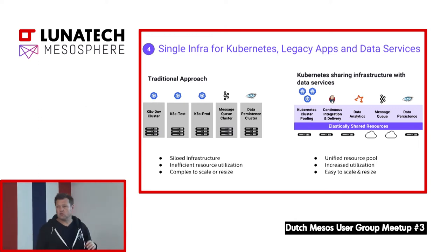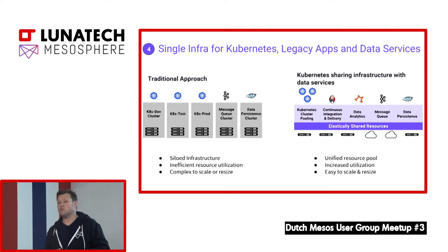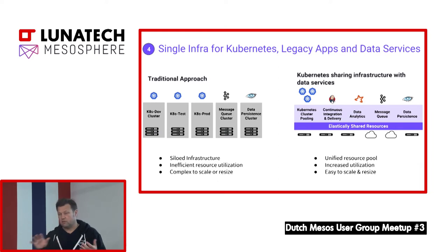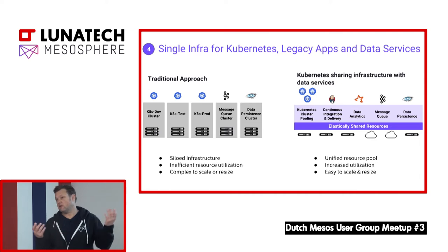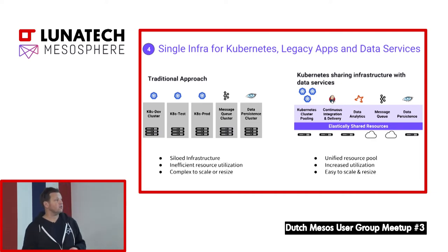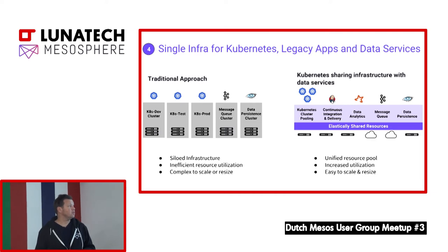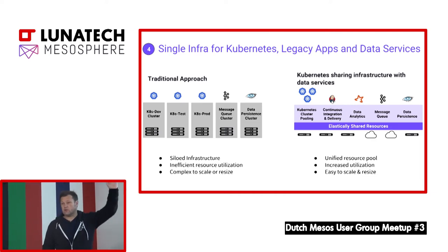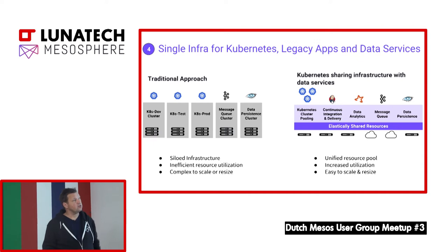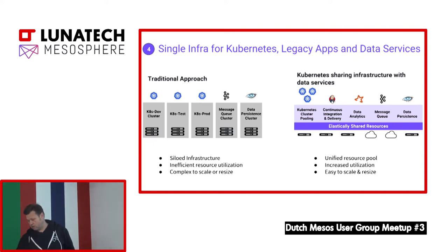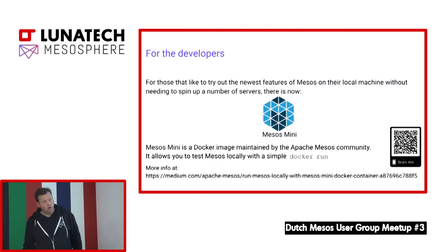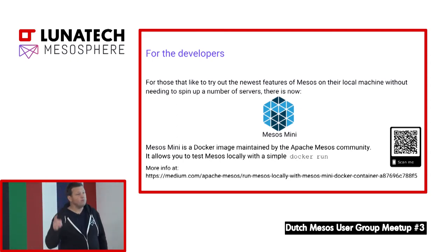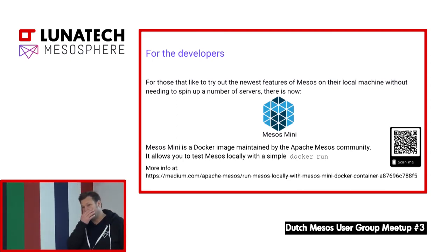DCOS nowadays offers one big infrastructure for anything — your containers, your data services — combined in one big infrastructure. For central IT, that means they only need to provide VMs or an AWS account, deploy the DCOS agent on them, and the rest is handled automatically by the system. Before I jump into the demo, there is one thing you might have noticed on Twitter as well: there is now Mesos Mini, so developers interested in tinkering on Mesos can just do a docker run.